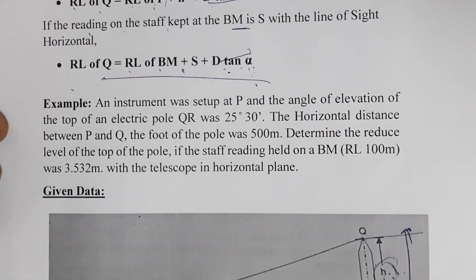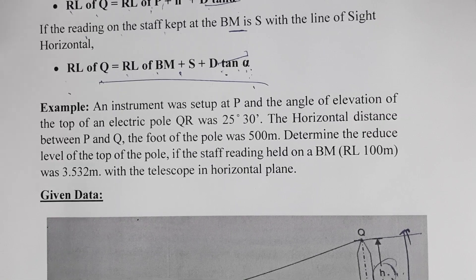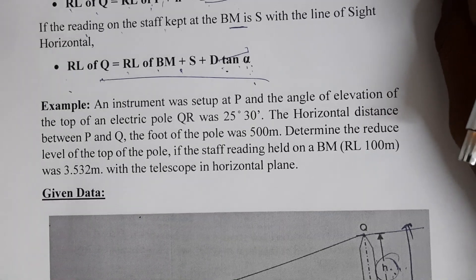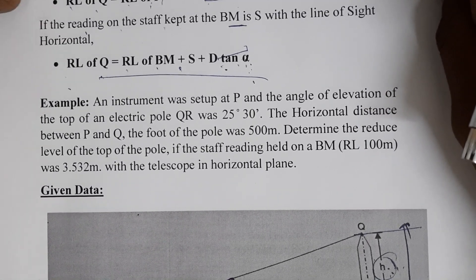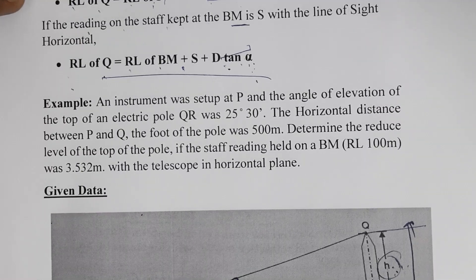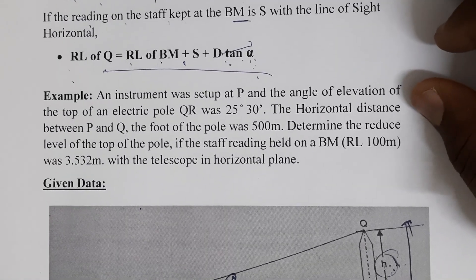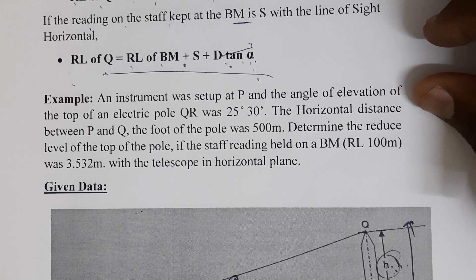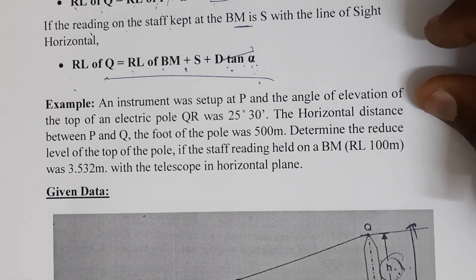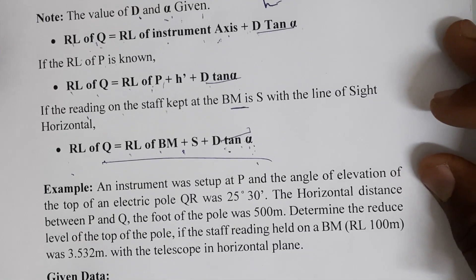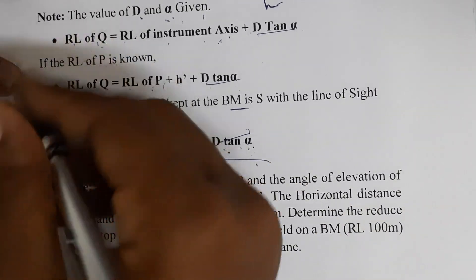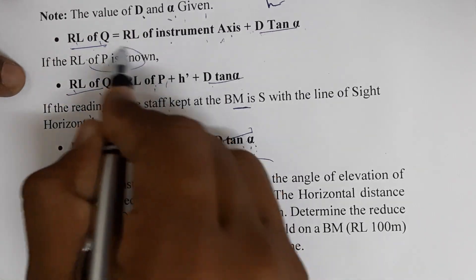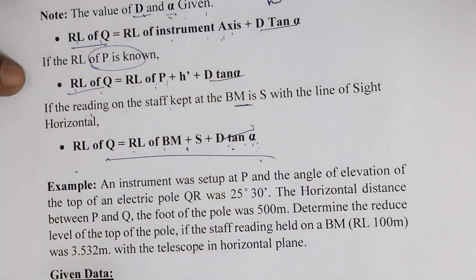Hello everyone. In the previous video we went through the theory of trigonometry leveling. There are three cases shown based on accessibility. The first case is where the base of the object is accessible. Based on that we showed the equation for how to find the RL of that point, using the distance and vertical angle if they are known.